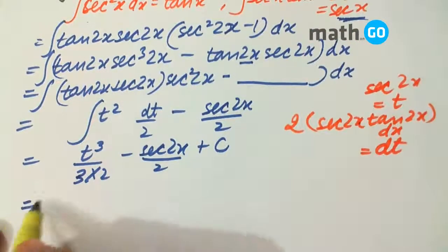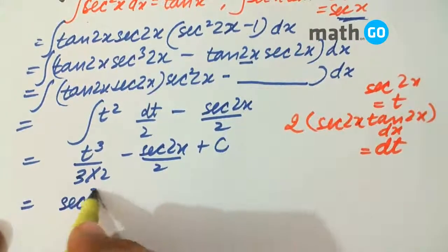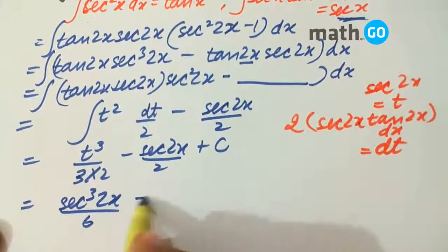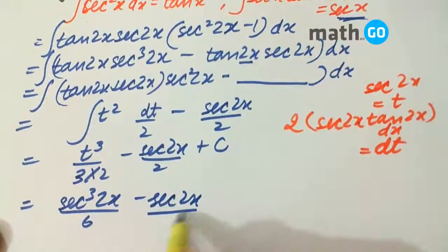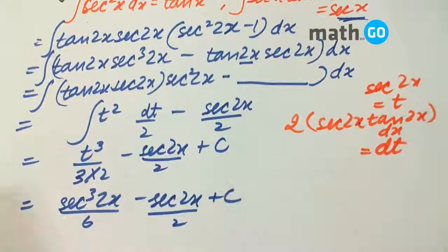And keeping the value of t, we get sec cube 2x upon 6 minus sec 2x upon 2 plus c, our final answer.